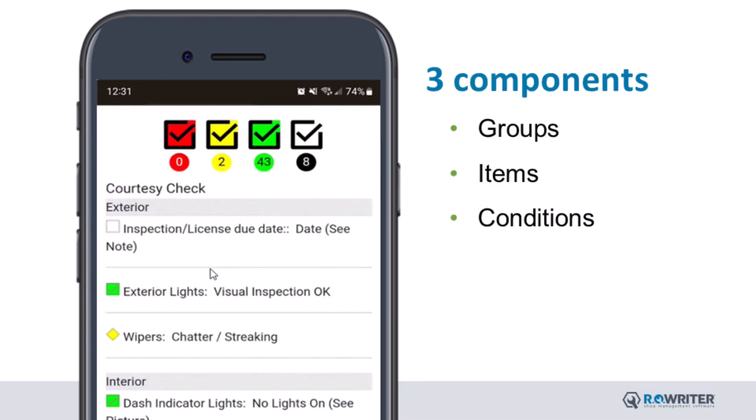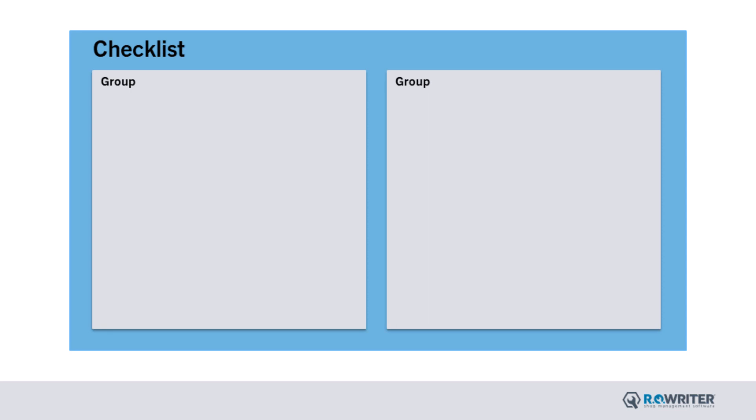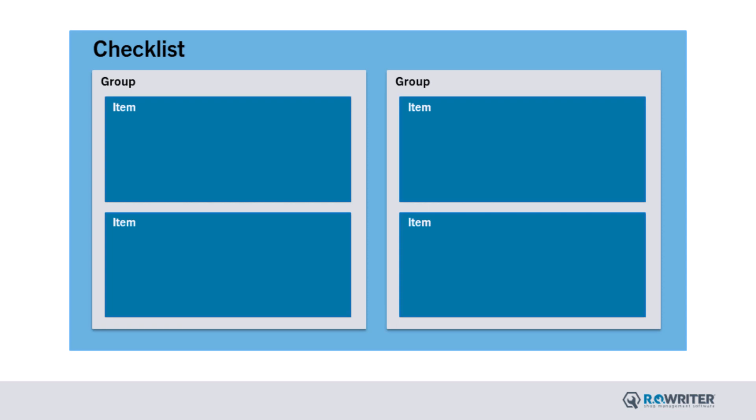Before we log into DVI Command, let's go through the three main parts of checklists mentioned earlier. Within a given checklist are groups such as interior, exterior, underhood, etc. Groups allow the checklist items to be segregated into sections of the vehicle, allowing the customer to better understand what area of the vehicle is being inspected. Within a given group are items such as wipers, horns, exterior lights, etc., that you want the technician to review during their inspection.